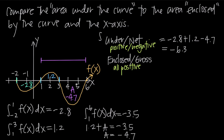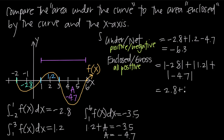On the other hand, if we want area enclosed by the curve and the x-axis — gross area — we treat everything as positive. We take the absolute value of each section: |{-2.8}| + |1.2| + |{-4.7}| = 2.8 + 1.2 + 4.7 = 8.7. So gross area is positive 8.7. That's the difference between area under the curve and area enclosed by the curve.